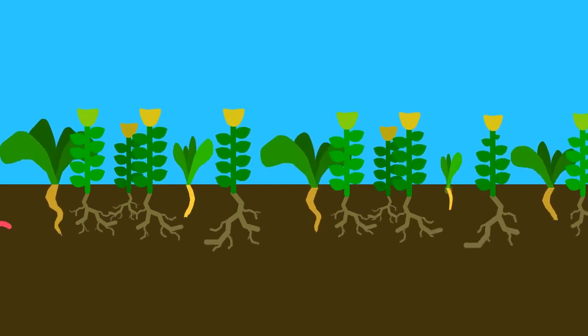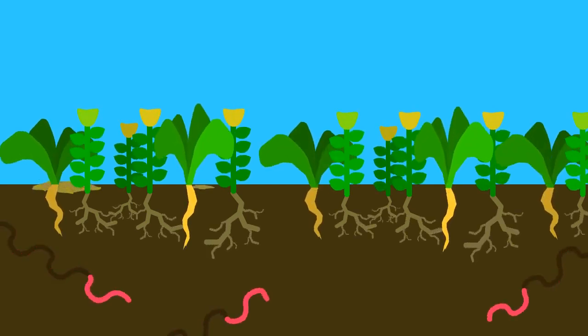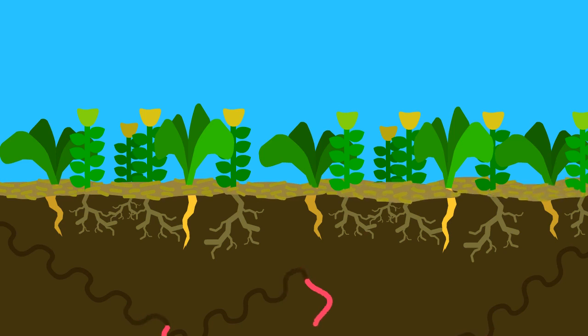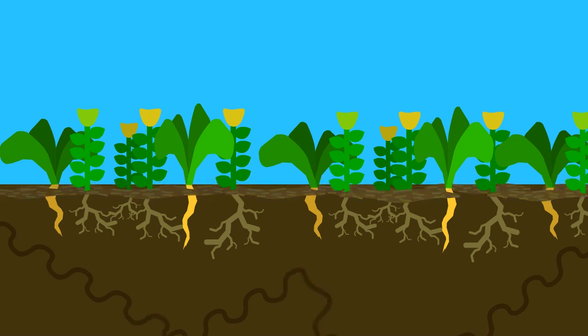Instead of tilling, plant cover crops whose roots break up the soil. Let the worms aerate the soil and bring down nutrients. Keep the soil covered with an organic mulch which will break down over time, adding more organic matter to the soil.